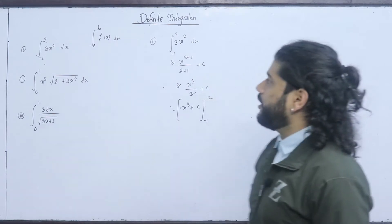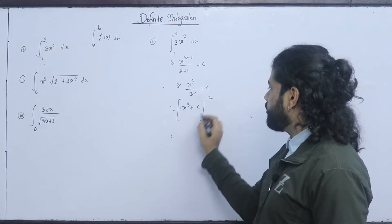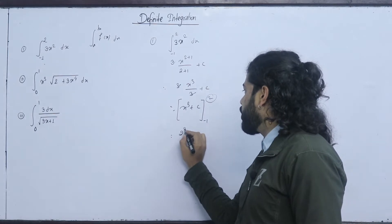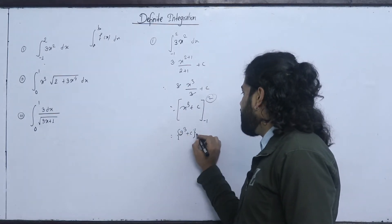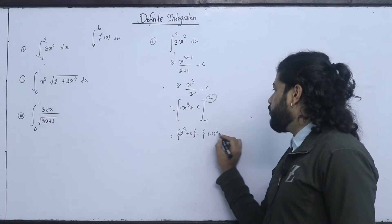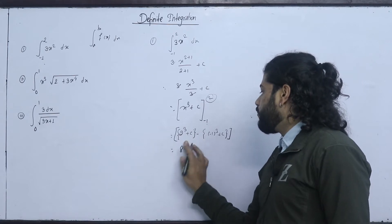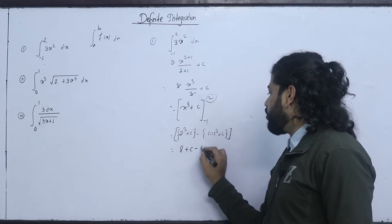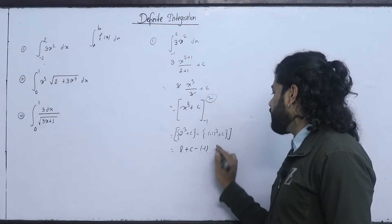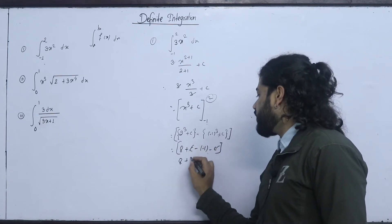Now what we do here: we substitute x at the upper boundary — 2³ plus c — and at the lower boundary, minus 1³ plus c. So we get 2³ plus c, minus (minus 1³) plus c. That gives 8 minus (minus 1) plus c minus c.